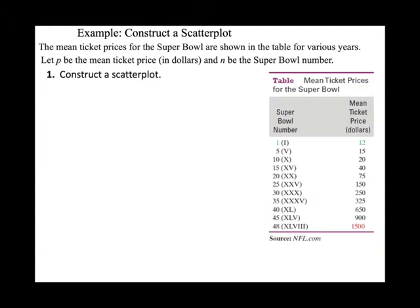Look at this example: the mean ticket price for the Super Bowl is given in a table for various years. Let P be the mean ticket price in dollars and let N be the Super Bowl number. The first column — the Super Bowl number N — is the explanatory variable on the X axis. The second column — the mean ticket price P — is the response variable on the Y axis.